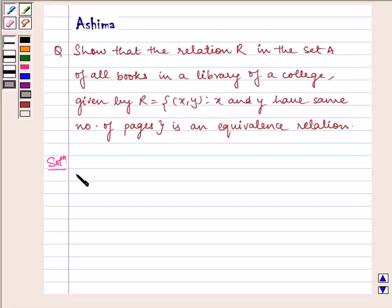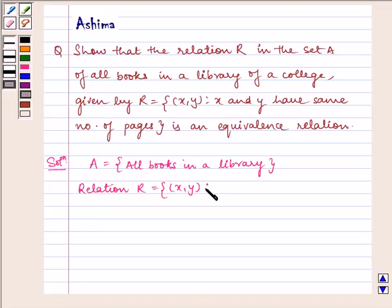Let us write the solution. Given to us: A = {all books in a library}. Relation R = {(x,y): x and y have same number of pages}.